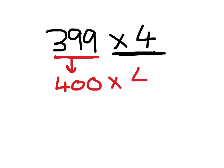So I'm going to do 400 times 4. Now when I double 400, it's 800. And when I double it again, it's 1600.